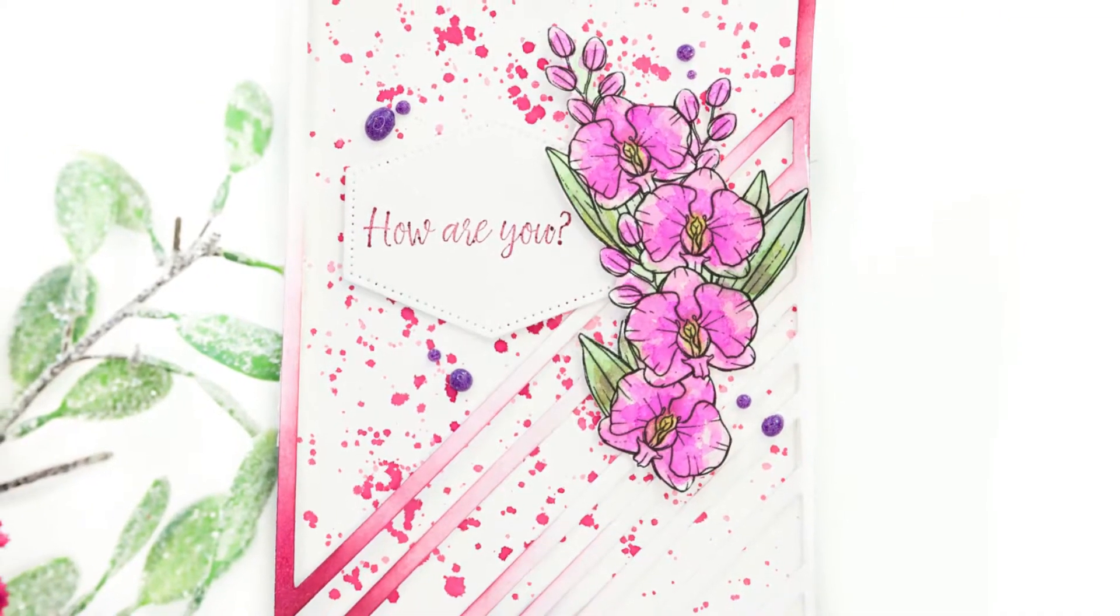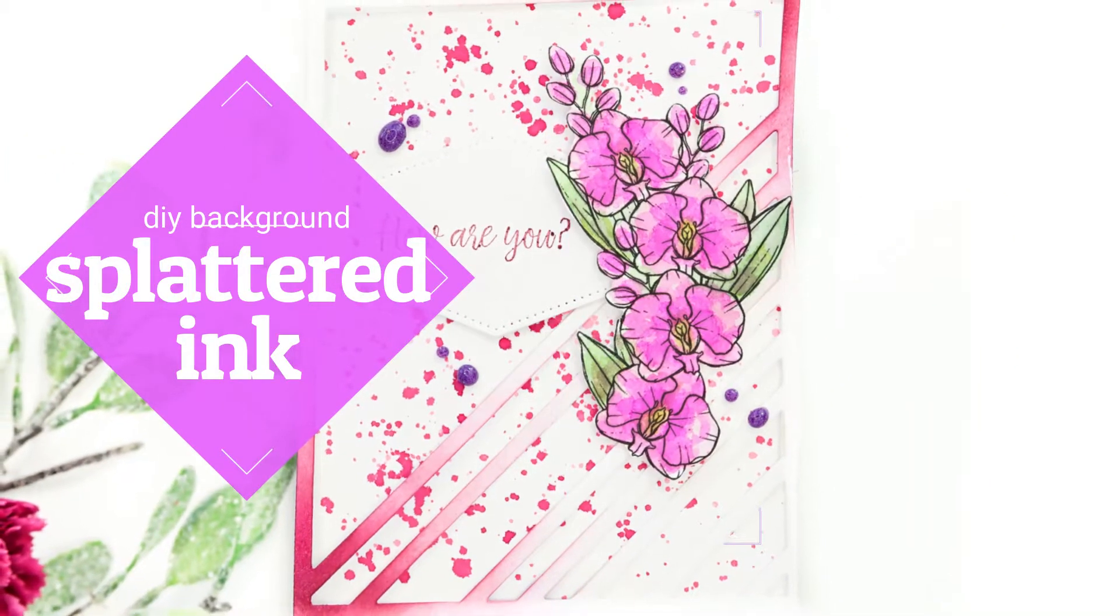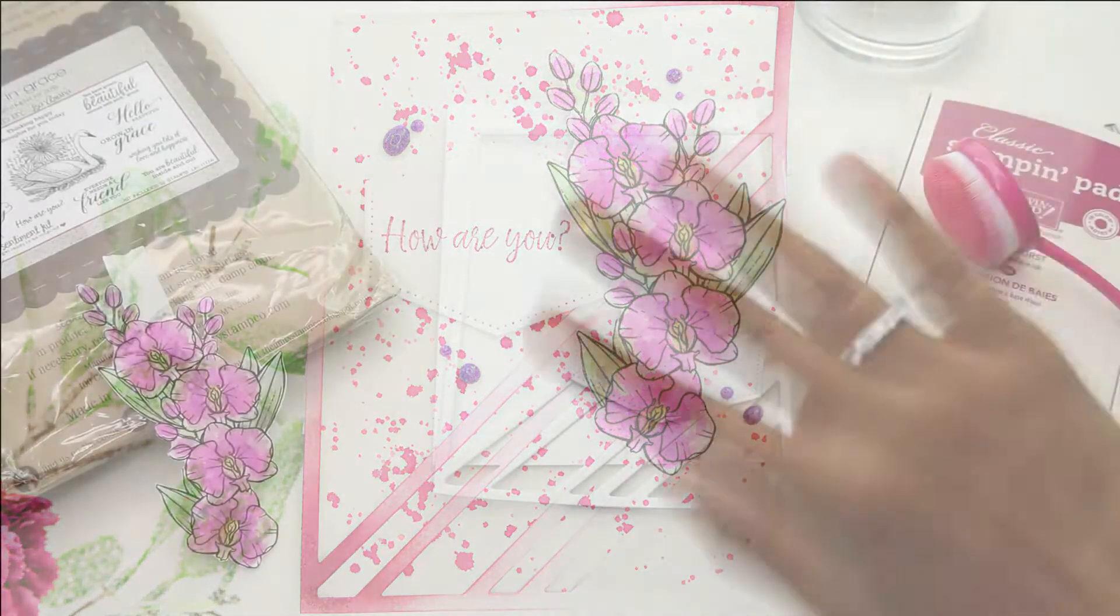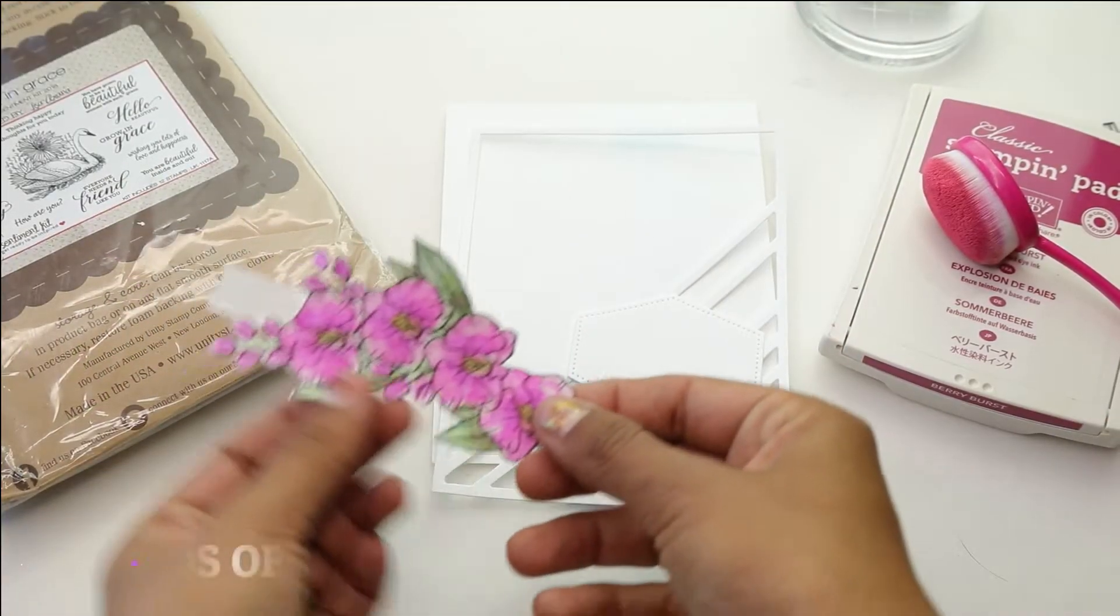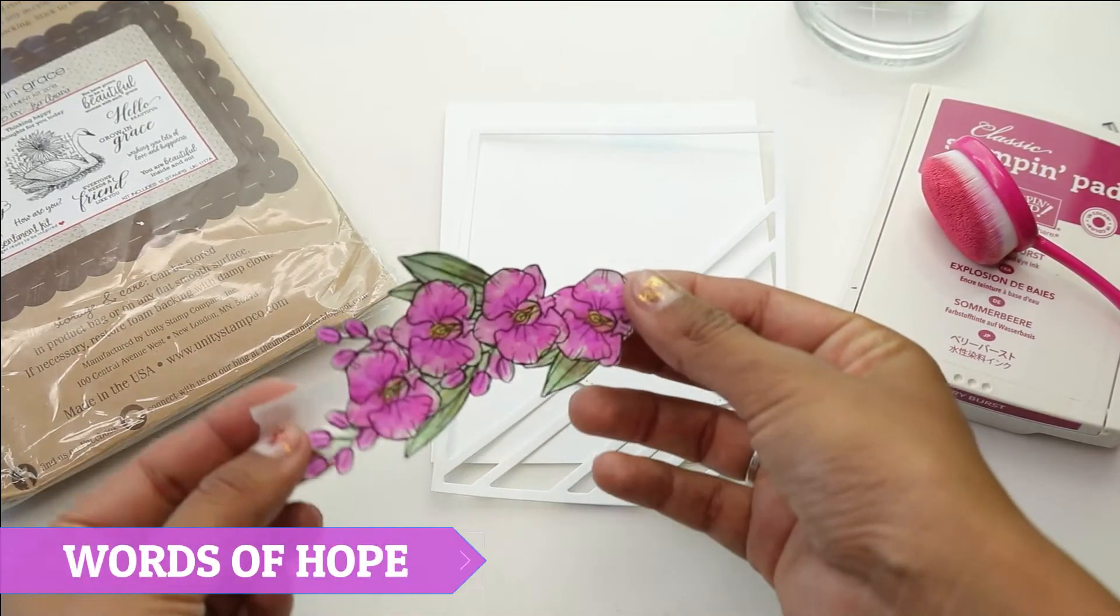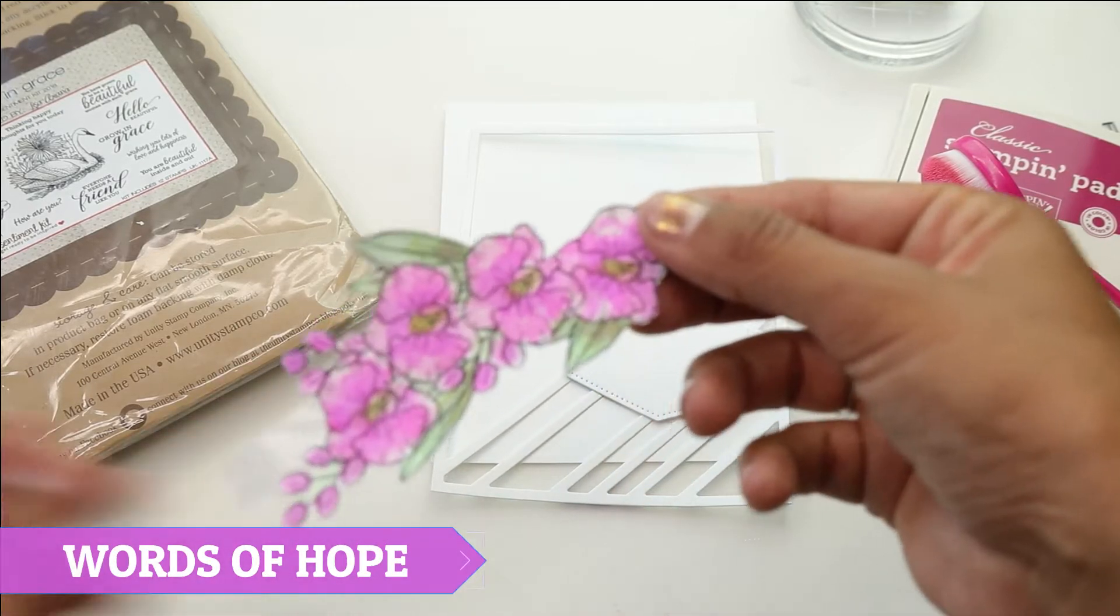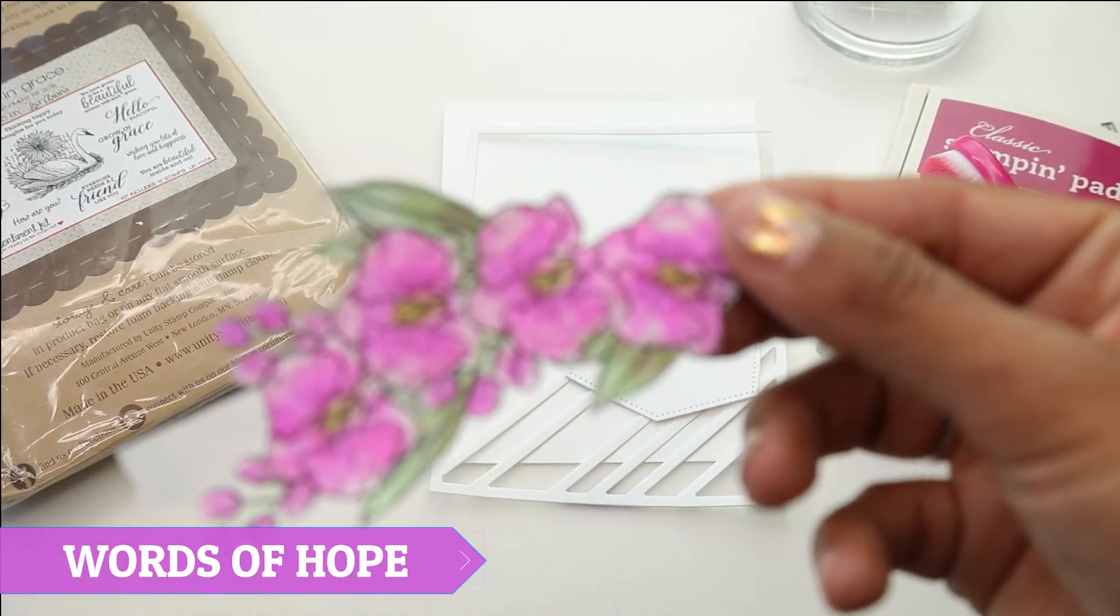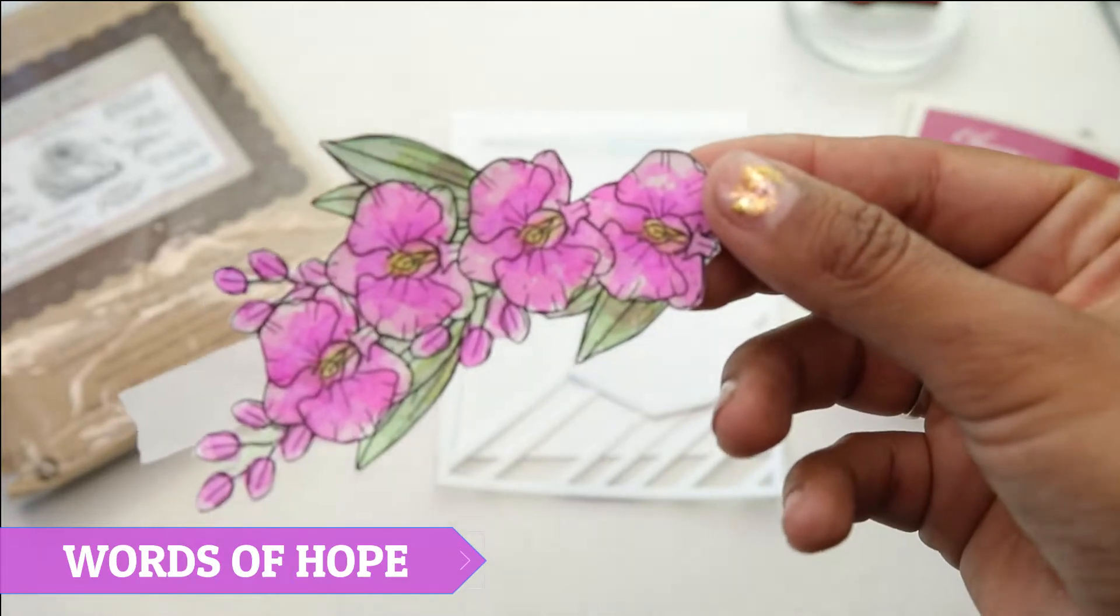Hey guys, welcome back to my YouTube channel. Today I have another Color Combos with Crystal, and today we are doing a DIY background of splattered ink. We are using the Words of Hope. This is a brand new stamp set from Unity's Stamp Company, and I'm gonna try to show it to you.